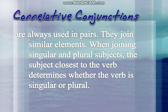Then we have correlative conjunctions. As the name suggests, they always consist of two conjunctions — they are always used in pairs. Like coordinating conjunctions, they also join similar elements. The main difference is that correlative conjunctions appear in pairs, while coordinating conjunctions are single conjunctions.